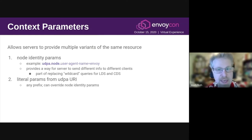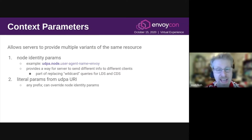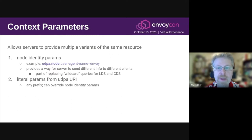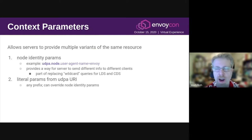The second source of context parameters are the ones encoded in the URI themselves, like the earlier example of node-type equals frontend. It can have any prefix — there are no restrictions on the content. It is applied after the node identity params, so it can actually override them. You could specify something in the URI that's udpa.node.something and it would override whatever comes from the bootstrap file.